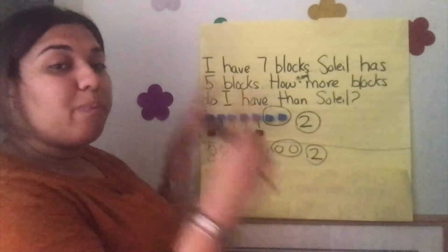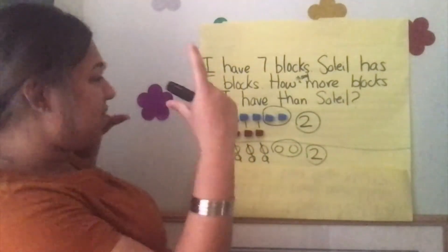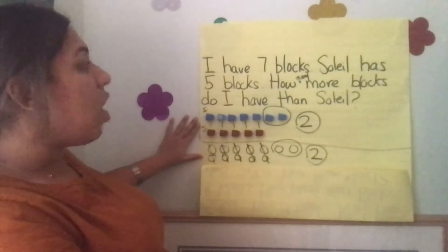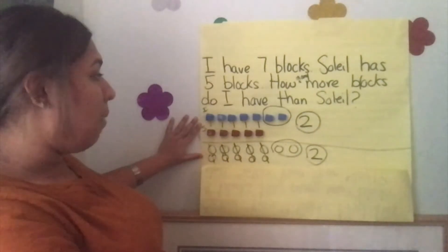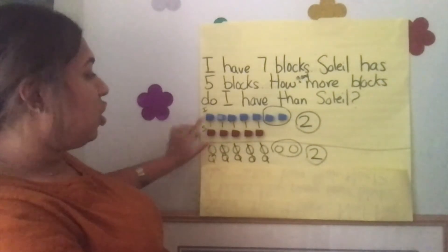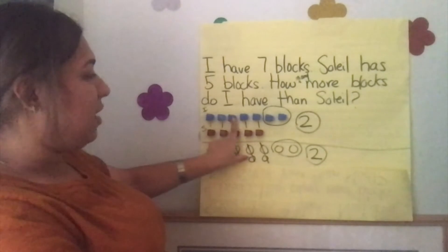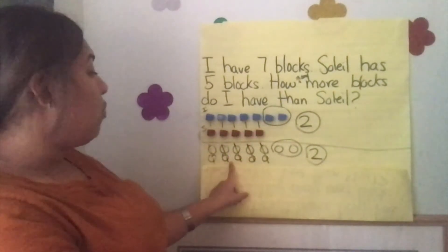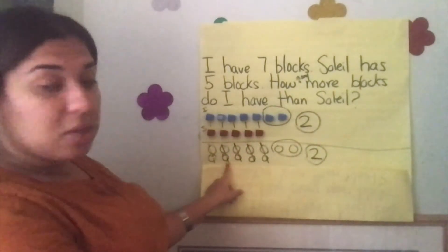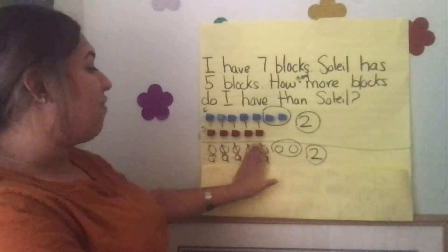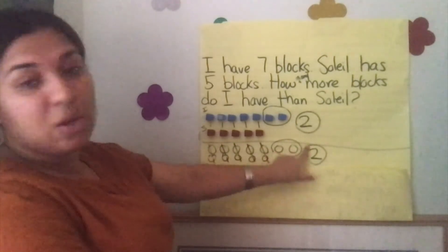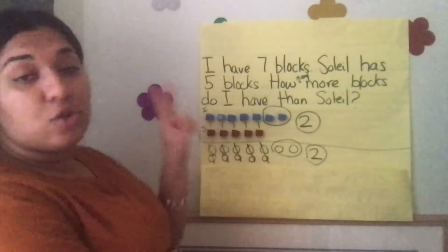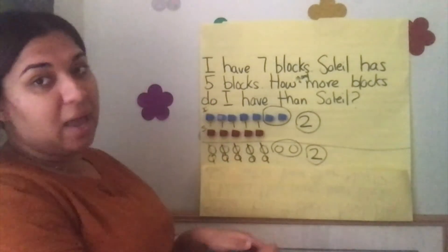Friends, get your camera ready and take a picture. This is the way you would solve a how-many-more problem. With the cubes, you would line them up to see how many are the same and how many more you have. And with the circles, you would cross out the amount that you have the same and see what's left over. In total, I have two more blocks than Soleil.